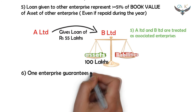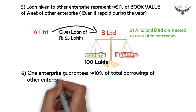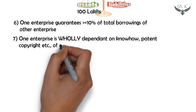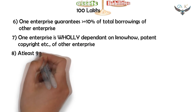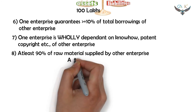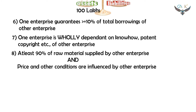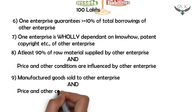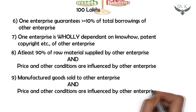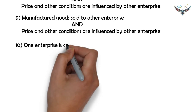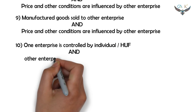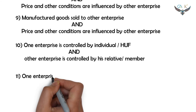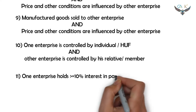The next criterion: one enterprise guarantees at least 10% of the total borrowings of the other enterprise. Another criterion: one enterprise is wholly dependent on know-how, patent, and copyright of the other enterprise. Also, at least 90% of the raw materials are supplied by the other enterprise and the price and other conditions are influenced by that other enterprise. Further, one enterprise is controlled by an individual or HUF and the other enterprise is controlled by his relative or member. Finally, one enterprise holds at least 10% interest in a partnership firm.